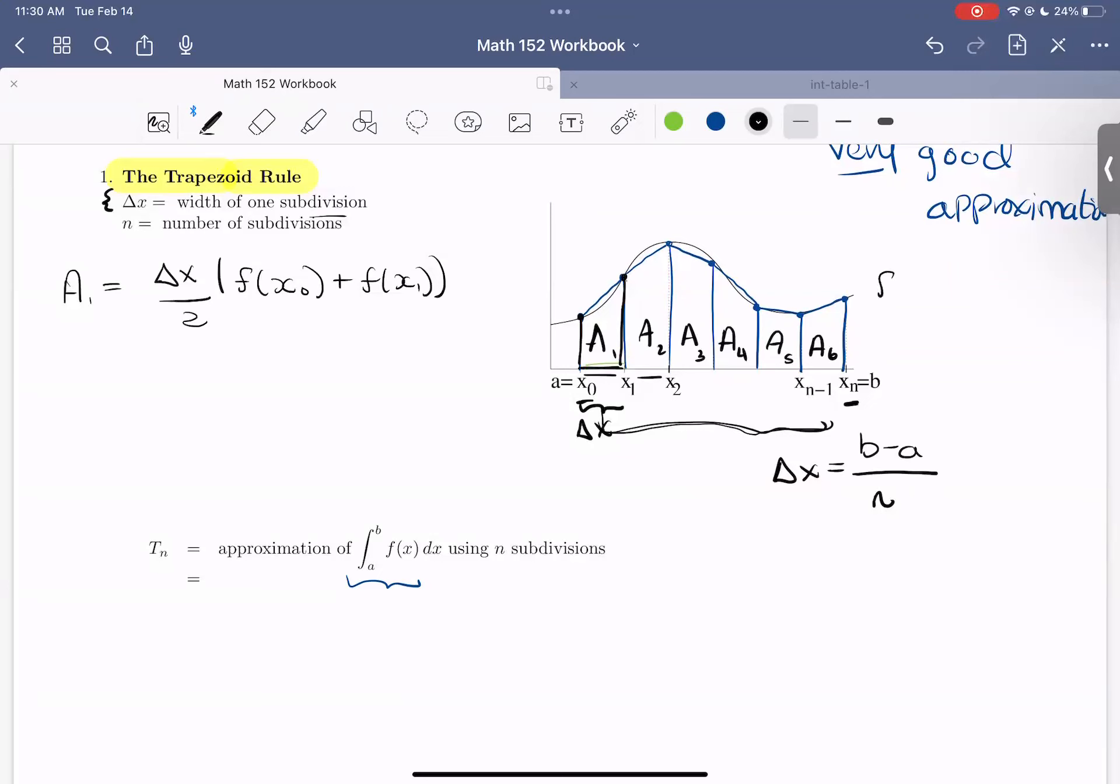So again, this curve is our F of X. So by evaluating at the first and second endpoints, that would give me the heights of my trapezoid. So I add those together, divide by two, multiply by the width.